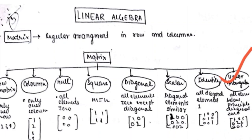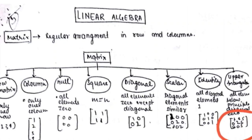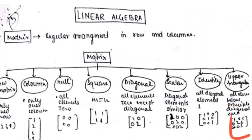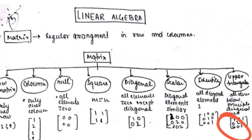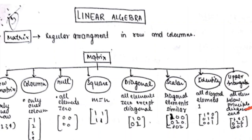In an upper triangular matrix, all elements below the principal diagonal are zero, and above the diagonal there are some values. For example, the diagonal values are 1, 2, 3, and above them there are values like 4, 5, and 6, while below the diagonal there are zeros. In a lower triangular matrix, the condition is reversed — values appear below the diagonal and zeros above.